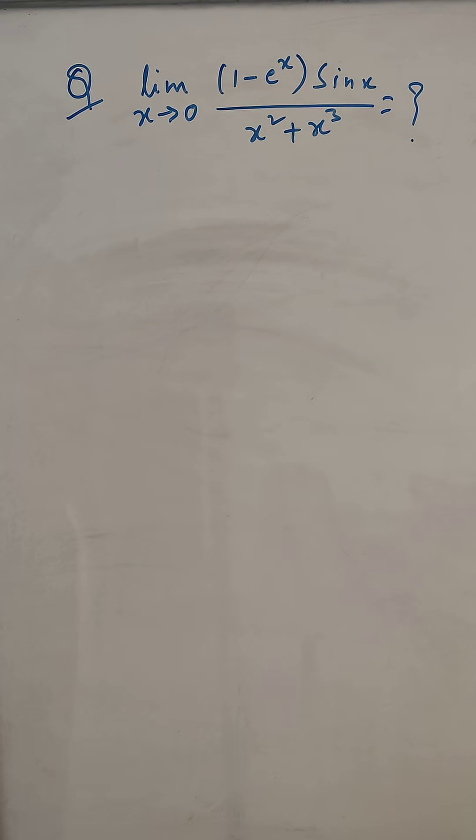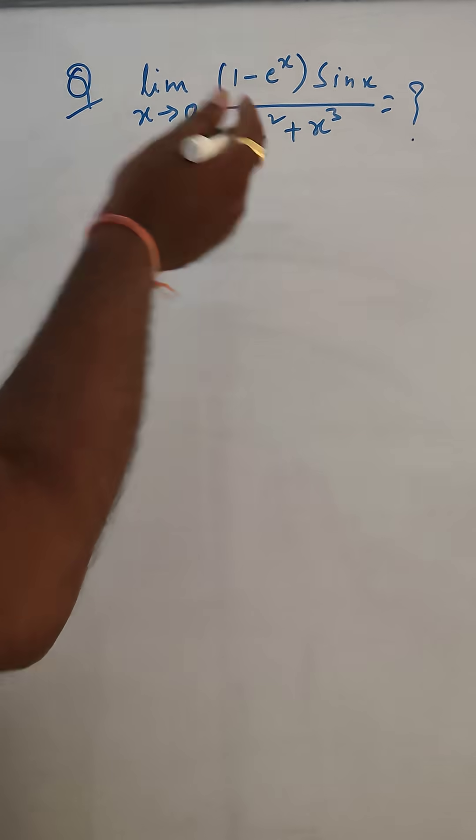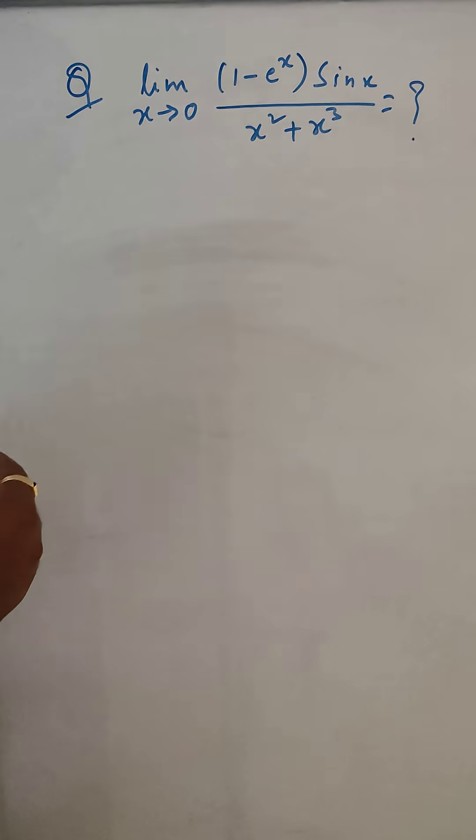Hello, let us solve this problem. Limit x tends to 0: 1 minus e to the power x, times sin x, divided by x square plus x cube. We have to find the value of this.